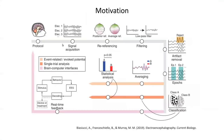This is the standard EEG pipeline for analysis. The first phase is to record the data using EEG electrodes, followed by some pre-processing steps such as referencing, filtering the noise, and removing the artifacts related to physiological sources.